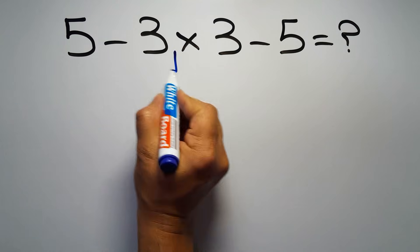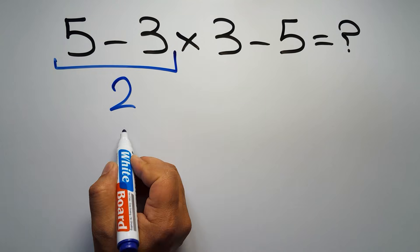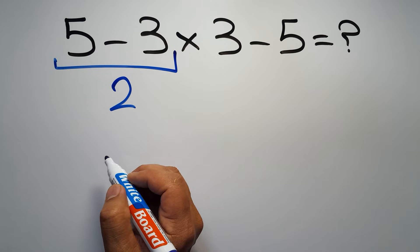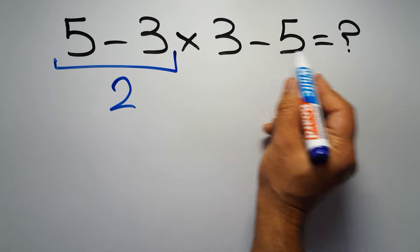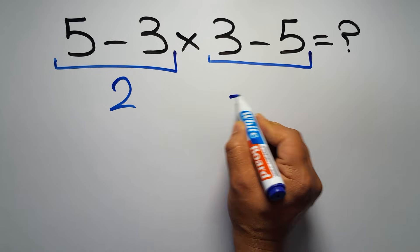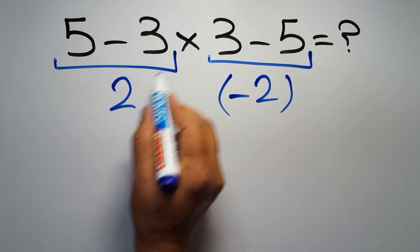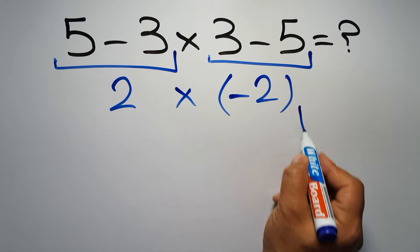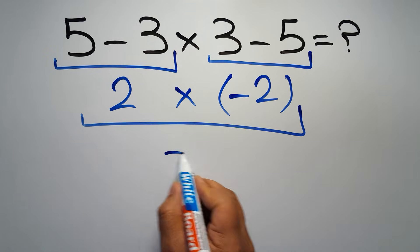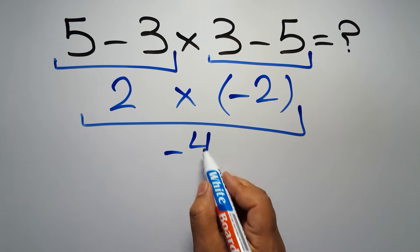5 minus 3 equals 2, and here we have 3 minus 5 which gives us negative 2. So 2 times negative 2 gives us negative 4. But this answer is not correct.